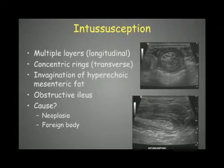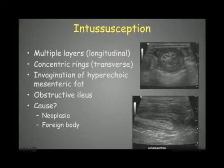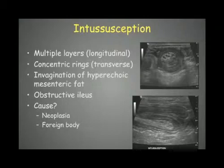We can also see hypoechoic areas corresponding to mesenteric vessels. We can apply a colored Doppler examination to see if flow is still present within those mesenteric vessels. If flow is still present, it means the flow can still pass, which is a better prognosis for surgery — meaning the intussusception may be reducible and a complete enterectomy may not be necessary.